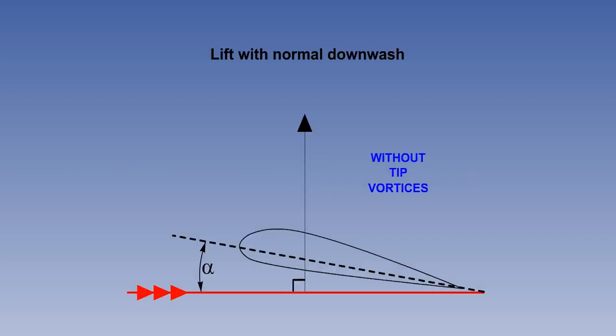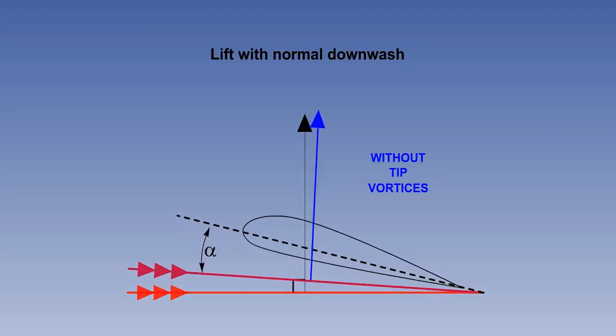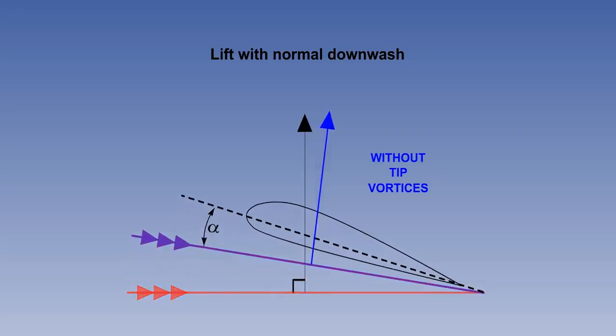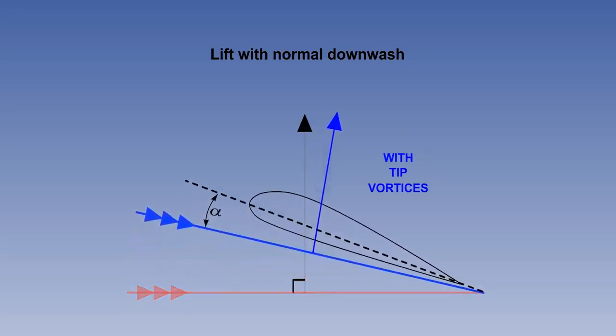If the vortices were absent, the lift vector would be at a right angle to the free stream relative airflow. But with the effective airflow created by the vortices, the lift vector is tilted back and creates drag, known as induced drag. The stronger the vortices are, the greater is the induced drag.